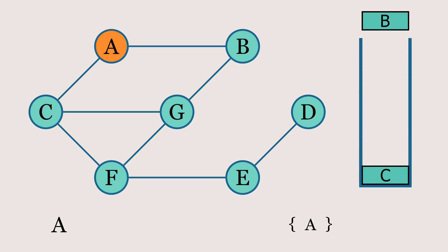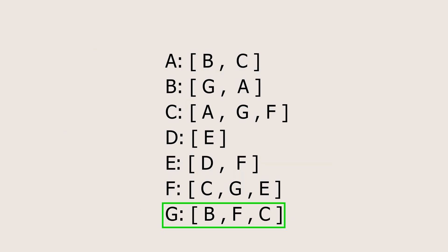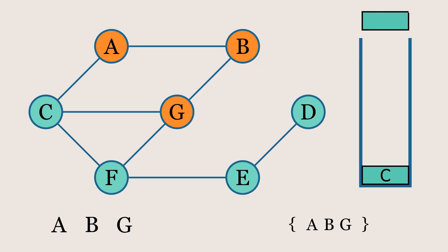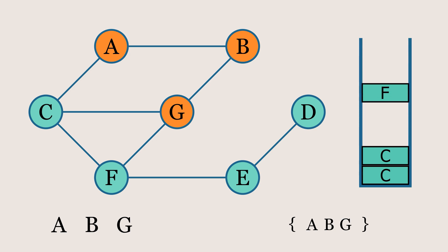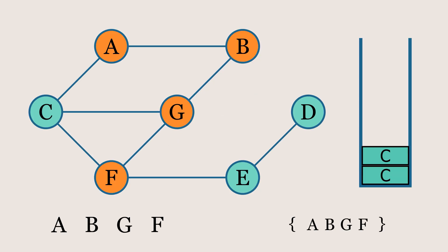Next, node B is popped from the stack. Since it's not in the visited set, we'll add it, print it, and mark it in orange. We'll look at B's neighbors — A is already visited, so we'll skip it and push G onto the stack. Now we'll pop G from the stack, add it to the visited set, print it, and mark it in orange. G has two unvisited neighbors, so we'll push them onto the stack in reverse order to maintain the correct traversal sequence. Now we'll pop node F from the stack, add it to the visited set, print it, and mark it in orange. Node F has two unvisited neighbors, C and E. We'll push them onto the stack in reverse order, so E goes first, followed by C.